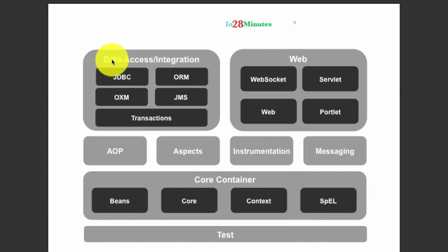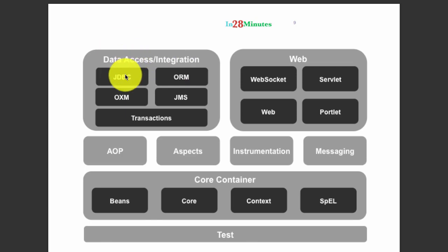Spring also has very good integration with data and integration layers. The data layer is something which talks to a database — getting data from there or storing data to it. Integration means talking to other systems, like connecting to a web service or sending a message on a queue. One of the important data access modules is Spring JDBC, which makes JDBC much easier. Something which would take 25 lines of code in JDBC would typically take 5 to 10 lines in Spring JDBC.